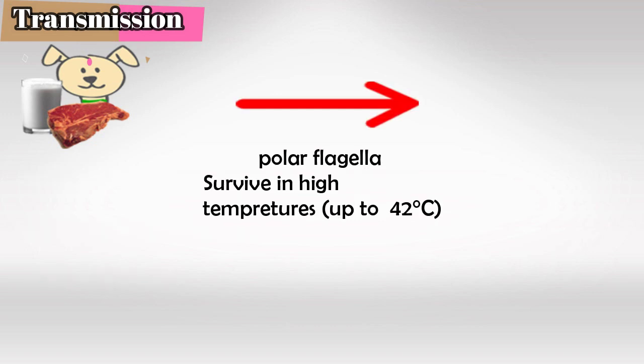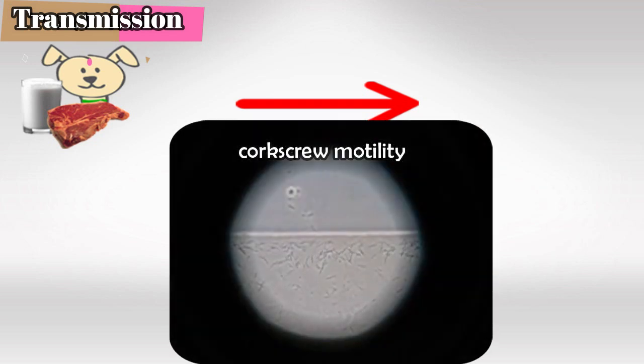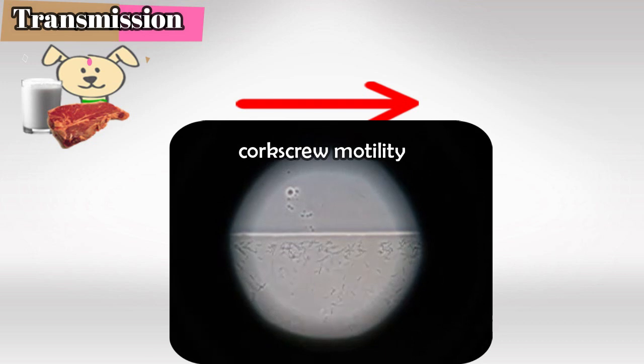Campylobacter uses polar flagella to move and it can survive in very high temperatures, up to 42 degrees Celsius. Under the microscope we'll see corkscrew motility, and this is the best image I could find.